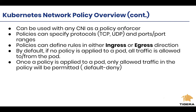Kubernetes network policies operate at layer 3 and layer 4, supporting IP protocols and for layer 4, TCP and UDP with port selection to allow or deny. They can be applied in ingress and egress directions. One important thing to note: by default, everything is allowed to talk to anything. However, the moment you apply a policy to a pod, it triggers a default deny — meaning unless you explicitly allow a type of traffic in the network policy, everything else will be denied.